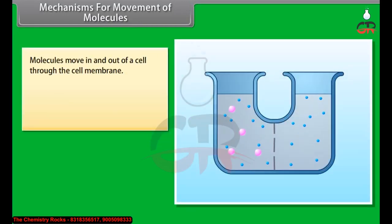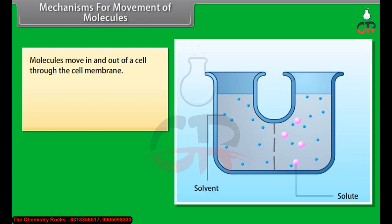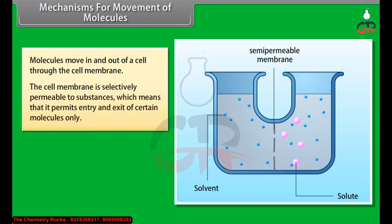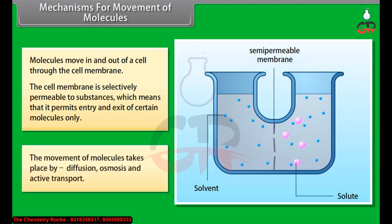Molecules move in and out of a cell through the cell membrane. The cell membrane is selectively permeable to substances, which means that it permits entry and exit of certain molecules only. The movement of molecules takes place by diffusion, osmosis and active transport.